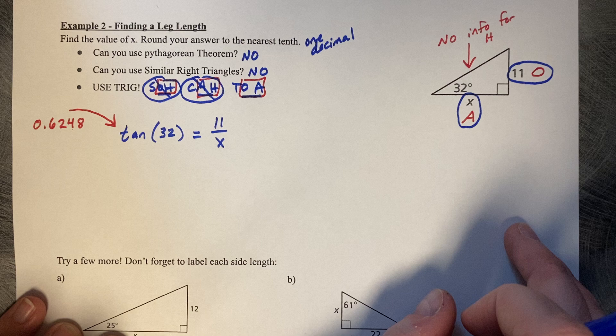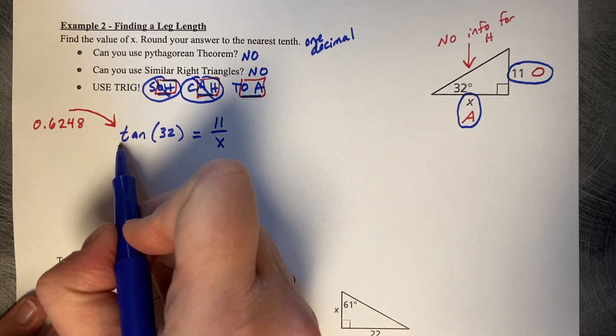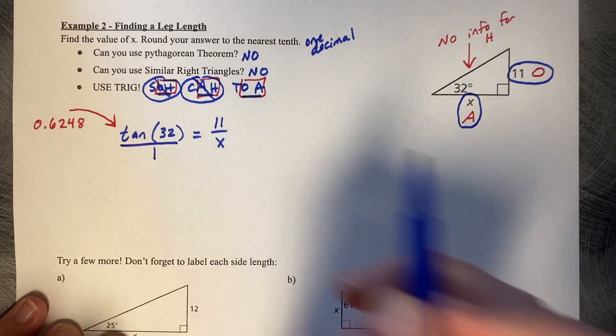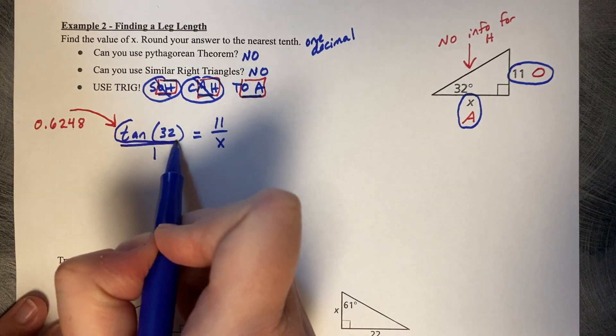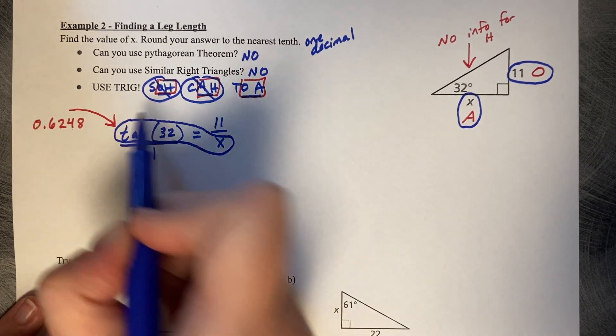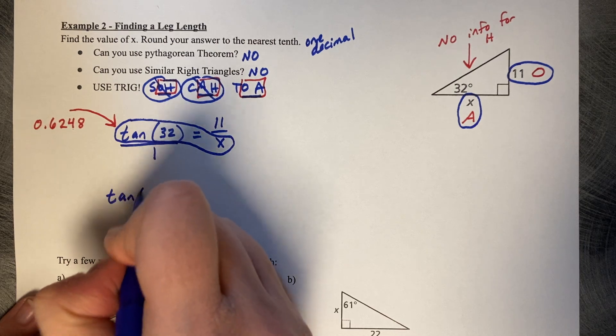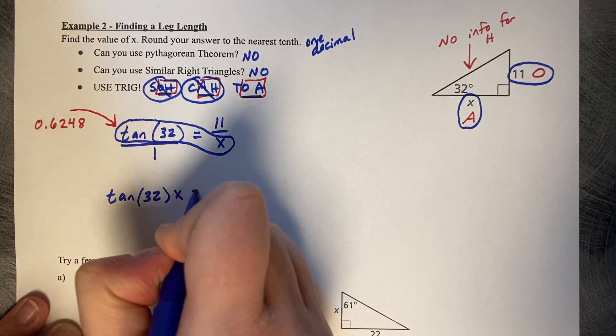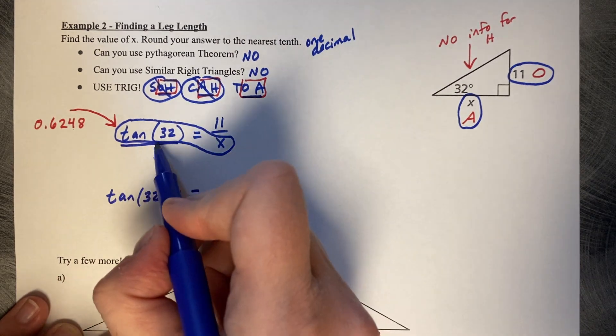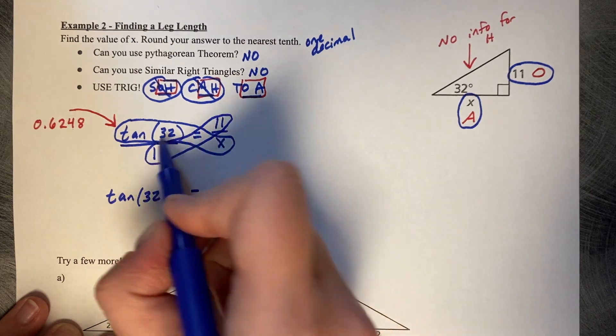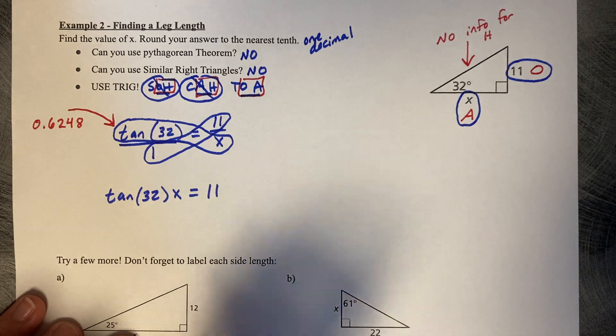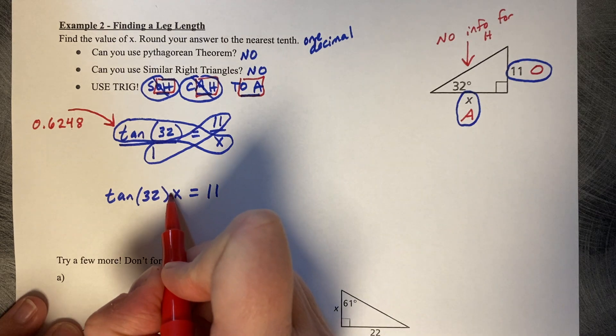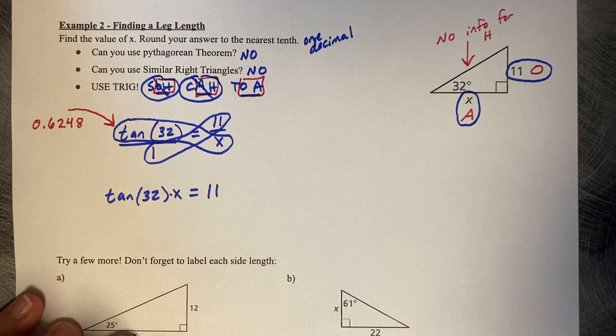We're going to follow the same pattern we did above. We're going to make the tangent of 32 over 1 and cross-multiply. The tangent of 32 times X is the tangent of 32X, and 1 times 11 is 11. Remember that in between the tangent of 32 and X is a multiplication symbol.